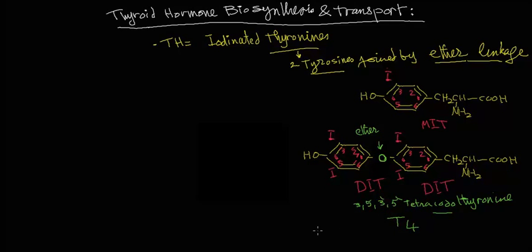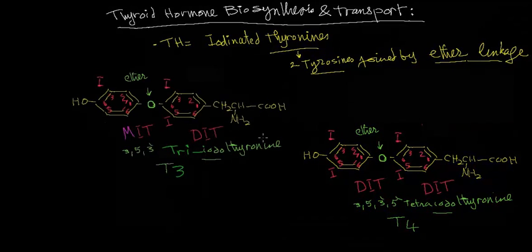And this is one of the thyroid hormones. So if we associate one molecule of diiodo tyrosine with monoiodo tyrosine, joining them together with an ether linkage like that, we'll end up with this structure which is 3,5,3-prime triiodo thyronine and we call this T3.